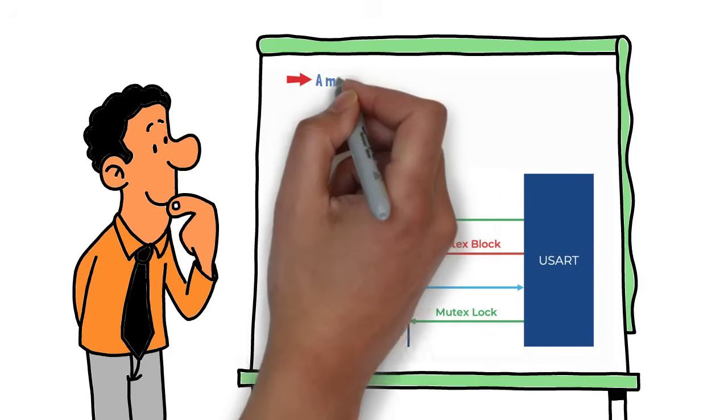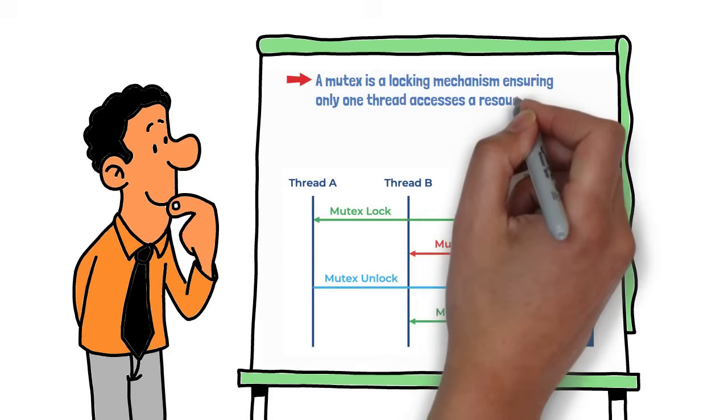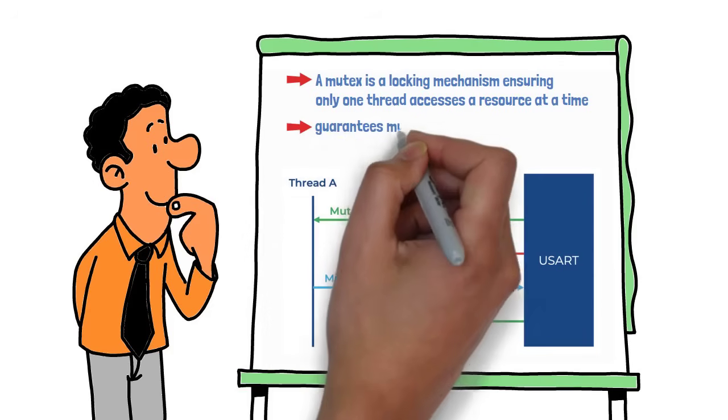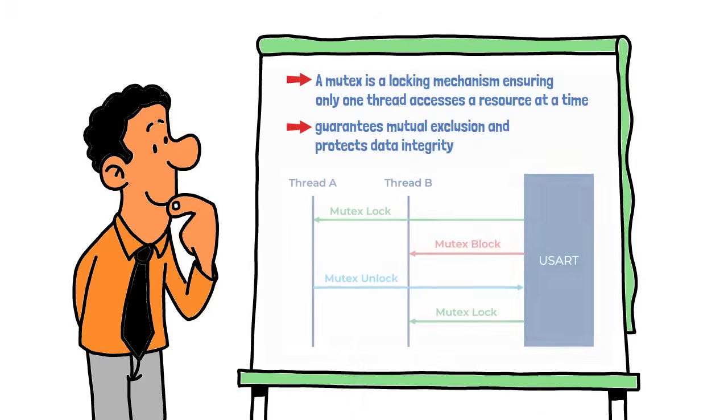A mutex is a locking mechanism ensuring only one thread accesses a resource at a time. It guarantees mutual exclusion and protects data integrity.